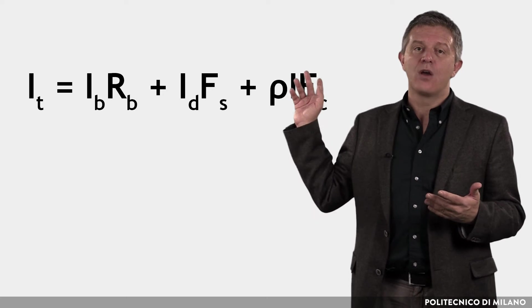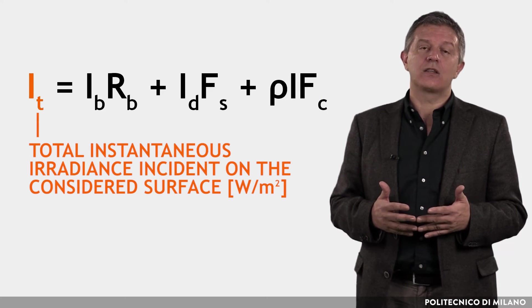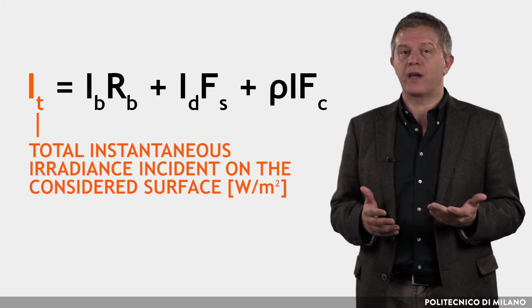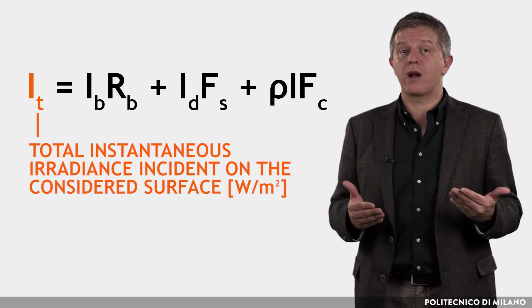Solar energy incident on a given surface at a given time and in a given site can be evaluated with this formula, where IT is the total instantaneous irradiance incident on the considered surface, expressed in watts per square meter.